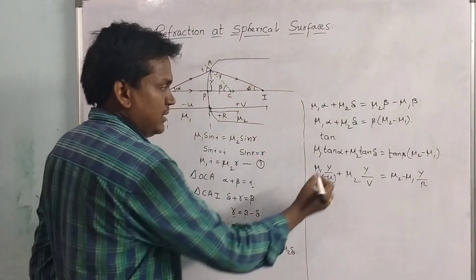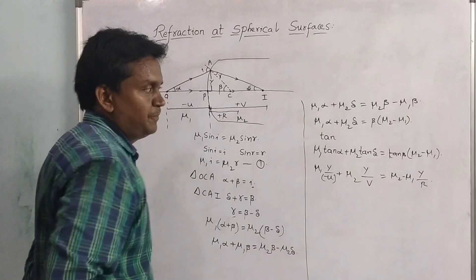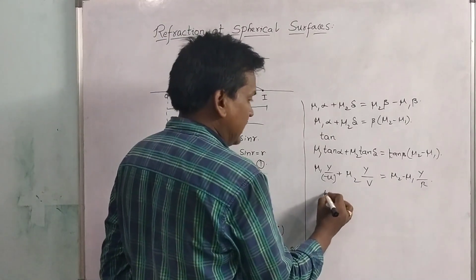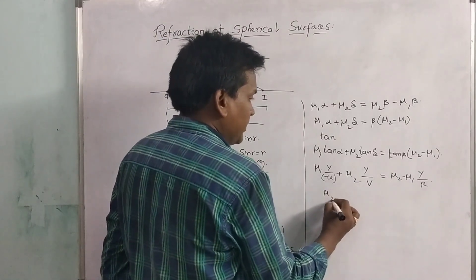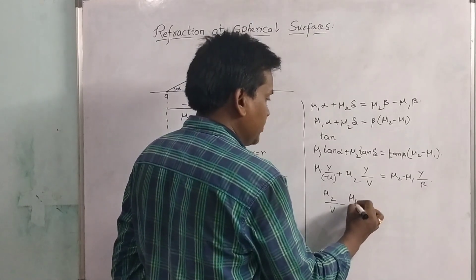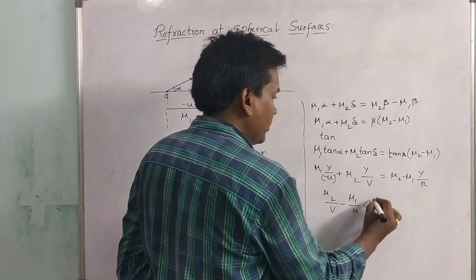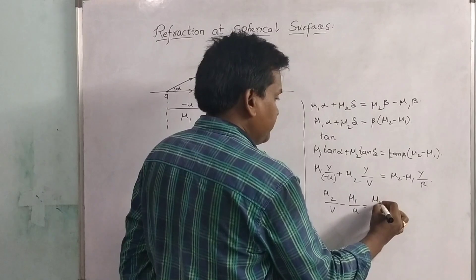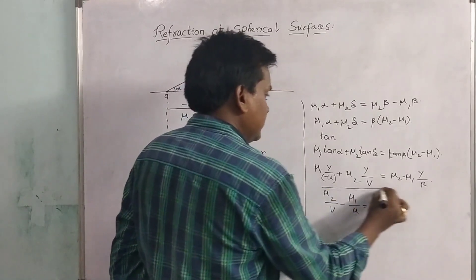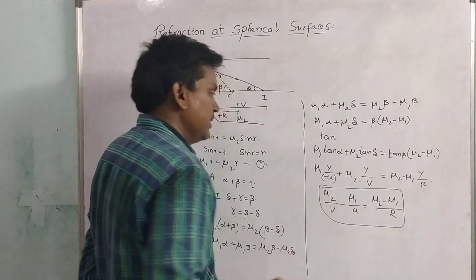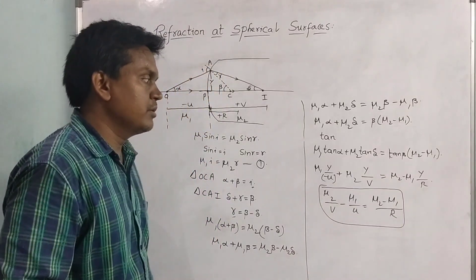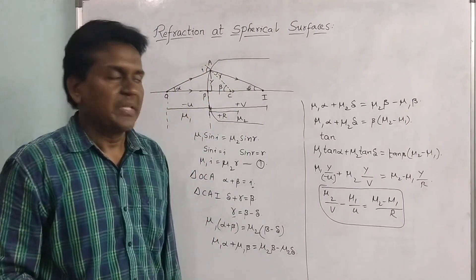Cancelling Y from both sides, our final equation is: mu2/v − mu1/u = (mu2 − mu1)/R. This is the refraction formula for a spherical surface.